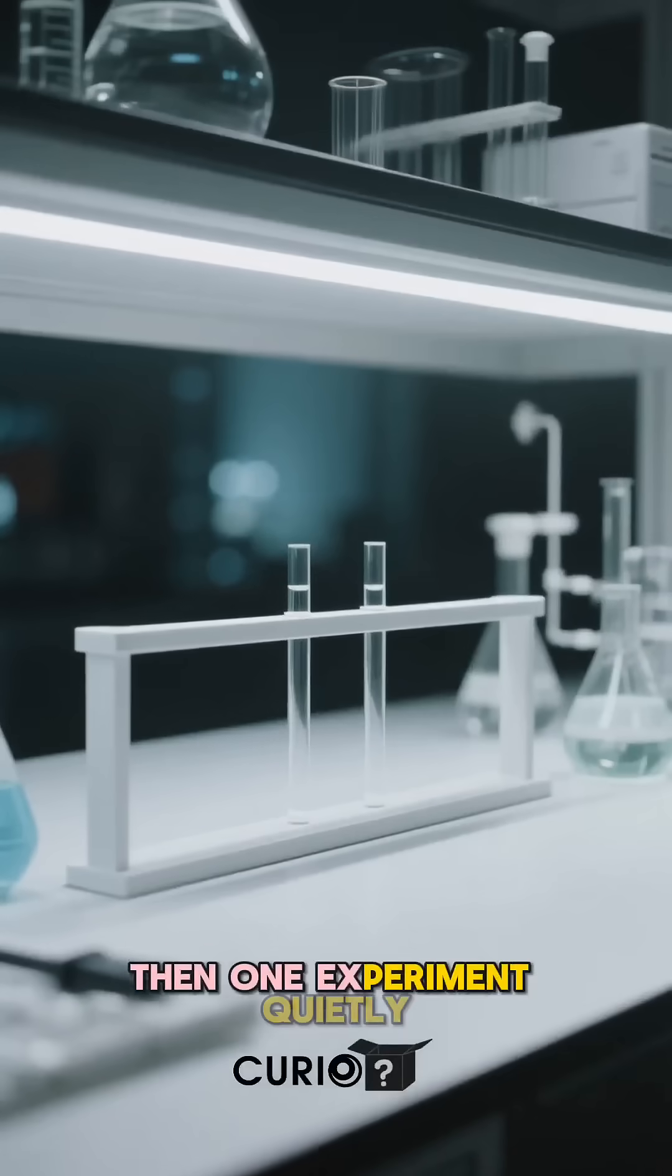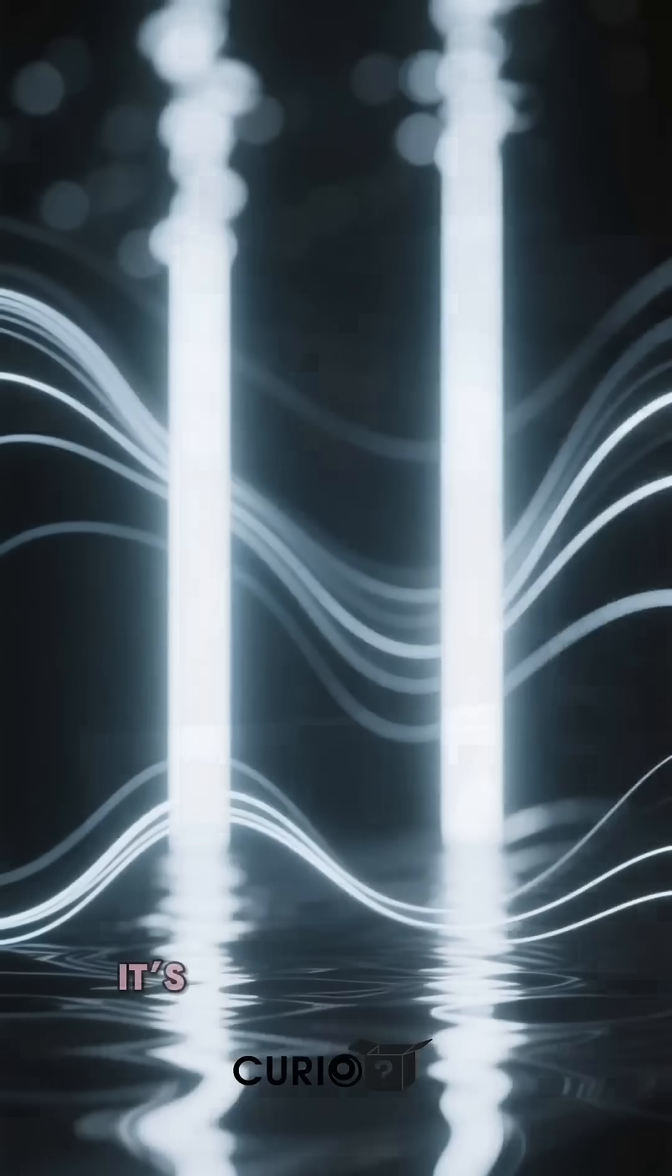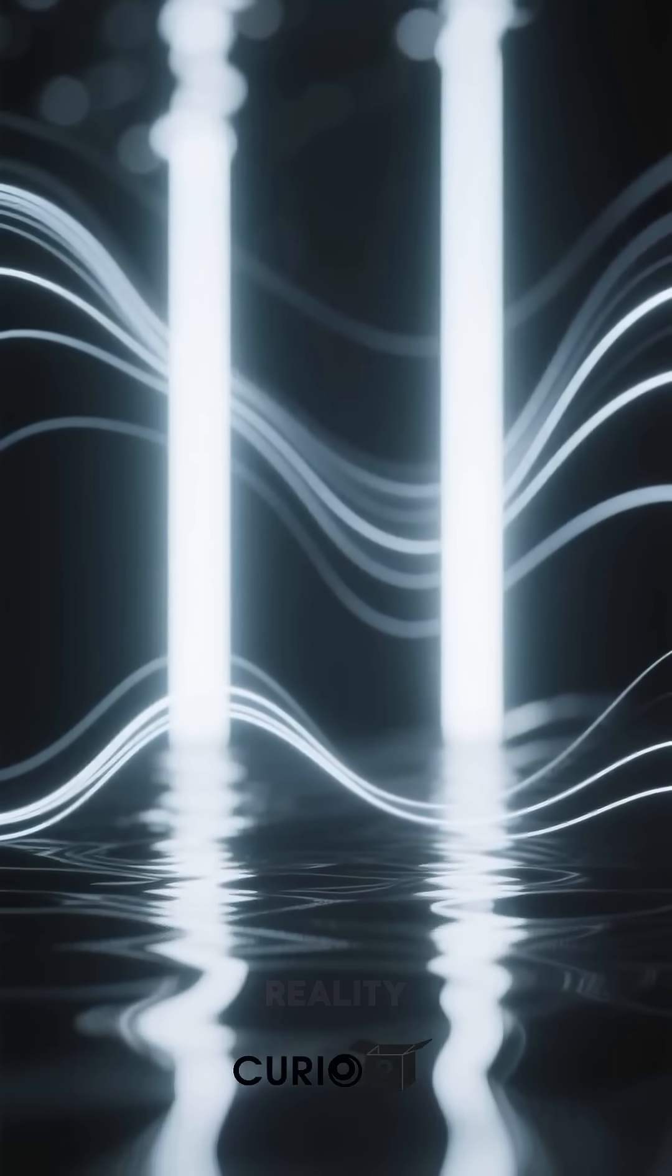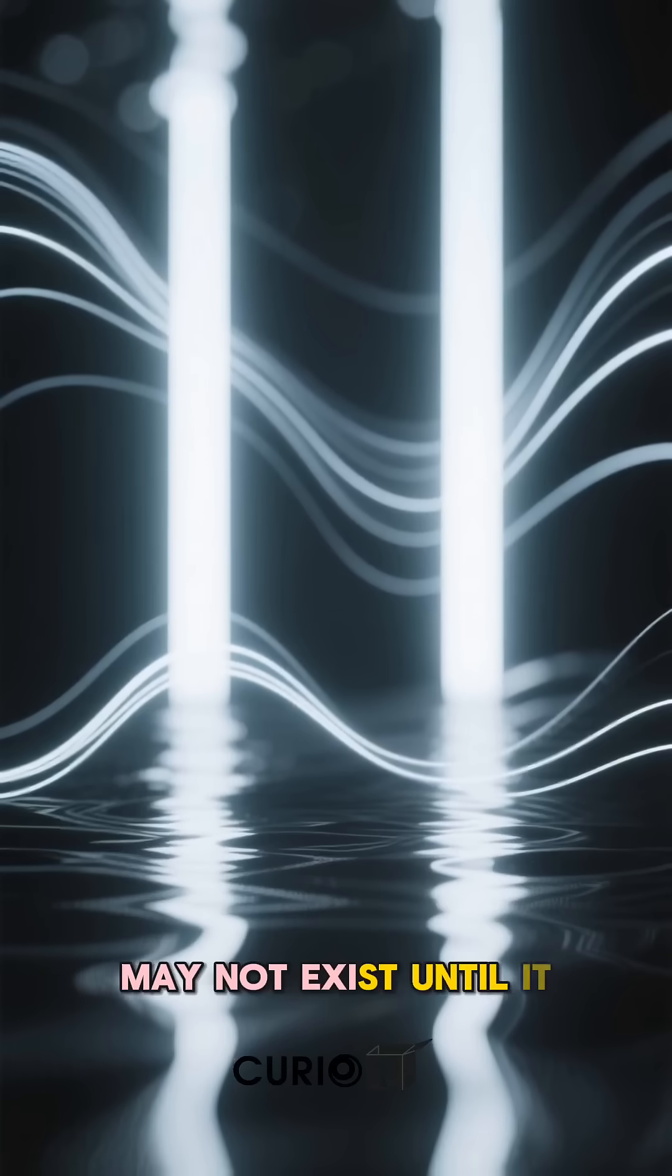Then one experiment quietly shattered that belief. It's called the double-slit experiment, and it suggests something deeply unsettling. Reality may not exist until it is observed.